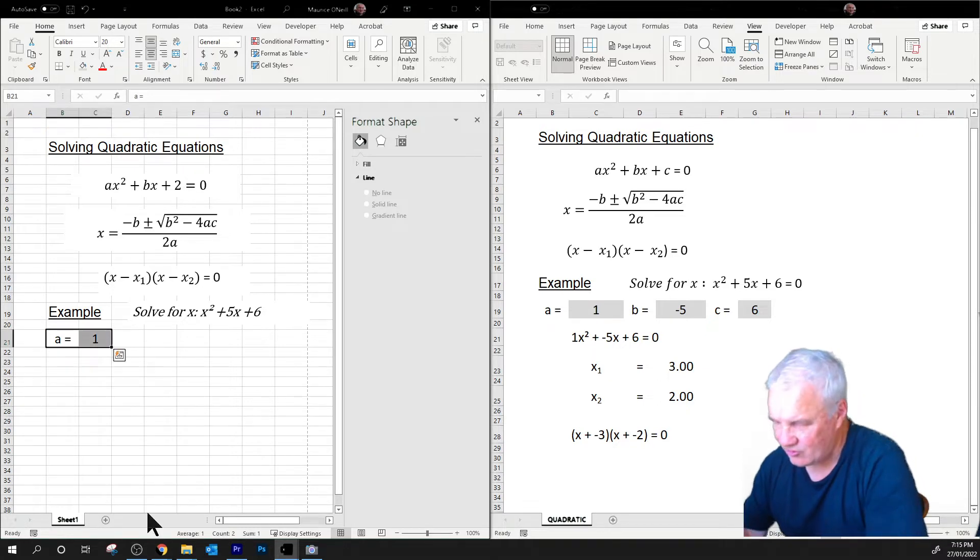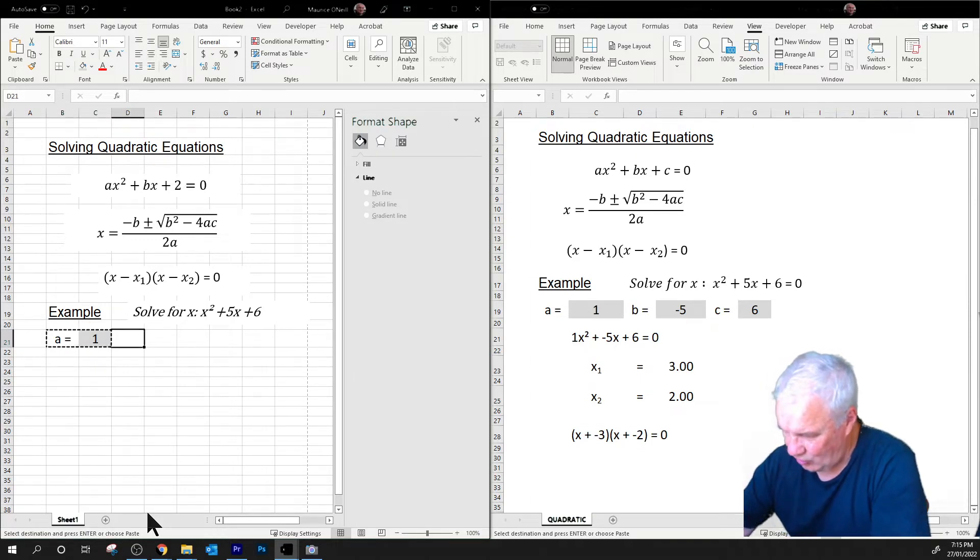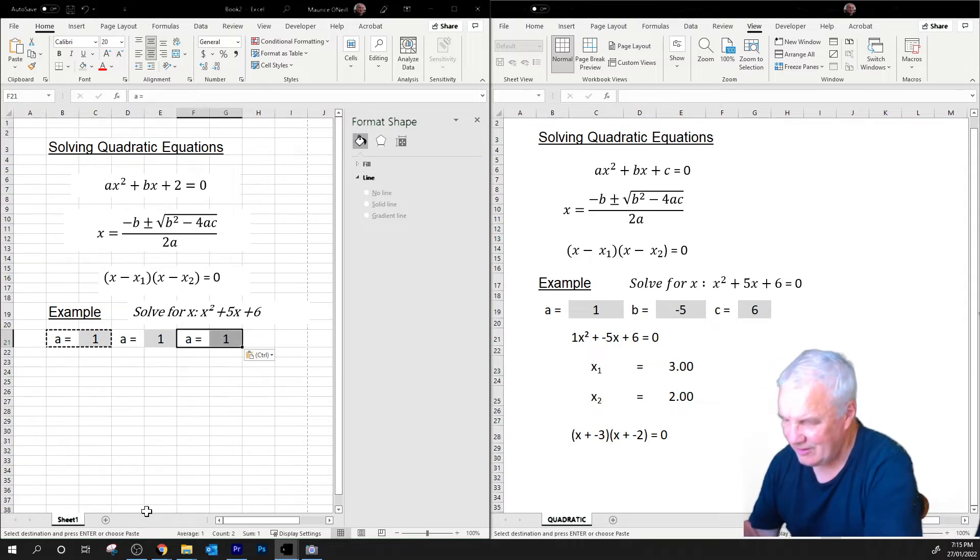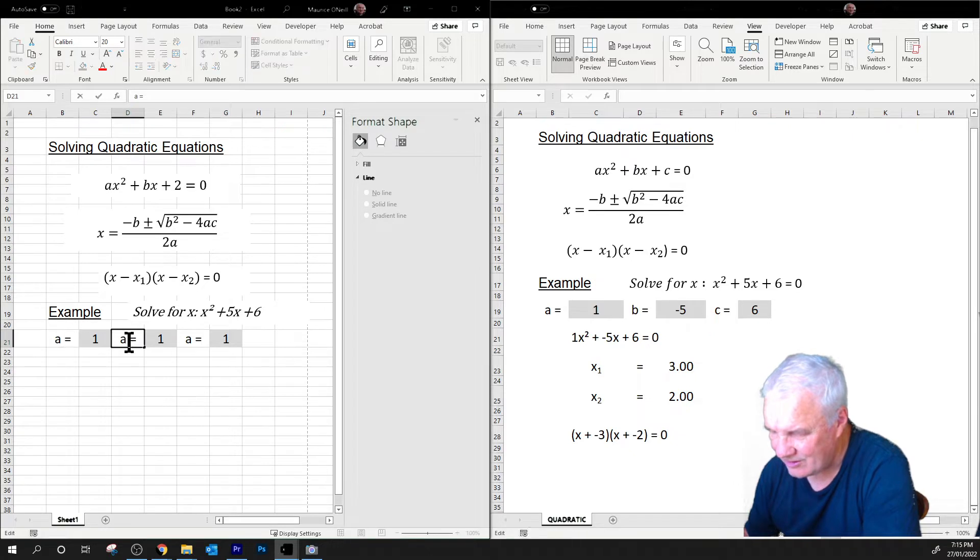So let's go control C for that one, and control V, and then control V, and then I'm going to call this one here and just edit it and make that B. And this one here, C.